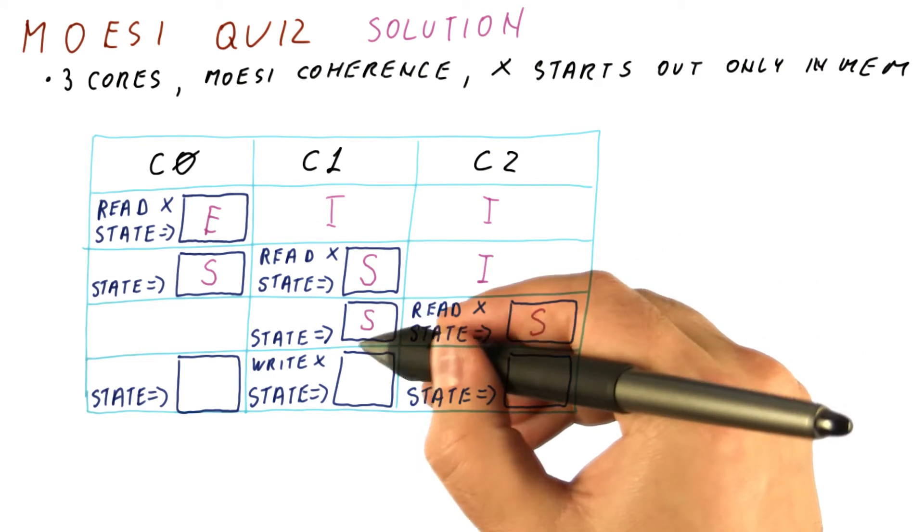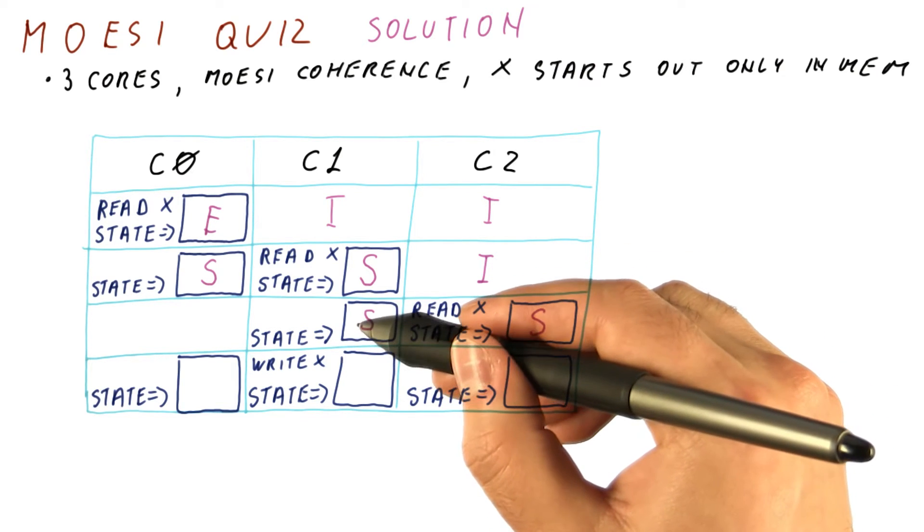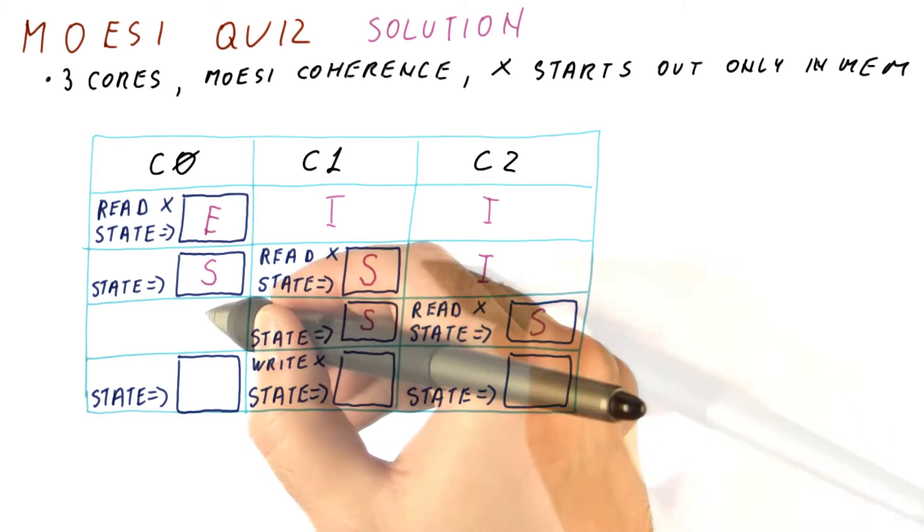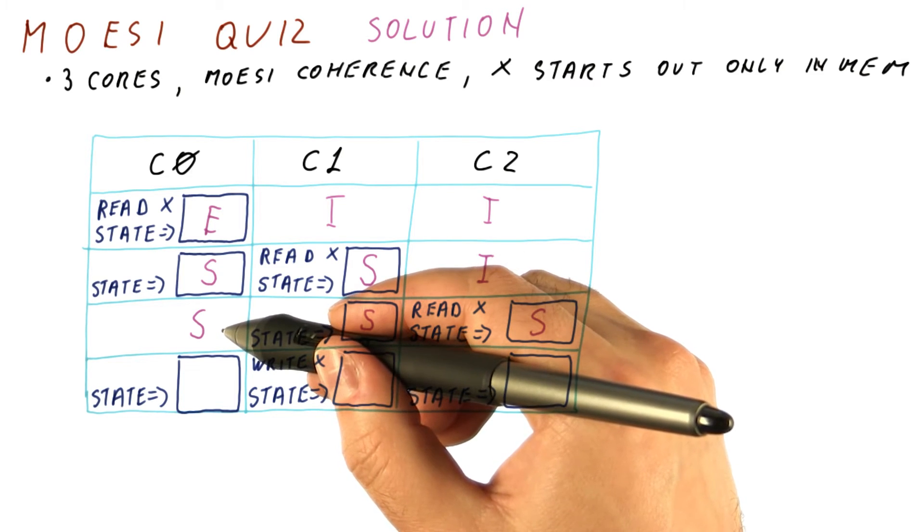C1, nothing happens to its shared state. When we snoop a read and we are in the shared state, we just stay there, because others reading is compatible with the shared state. C0 also is in the shared state. And now,